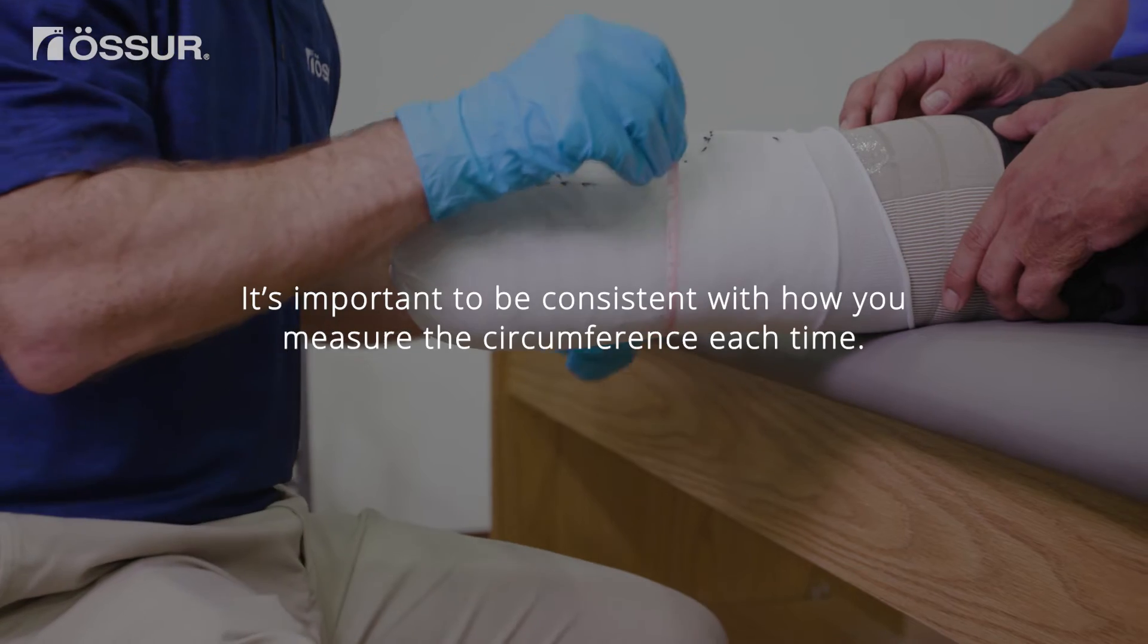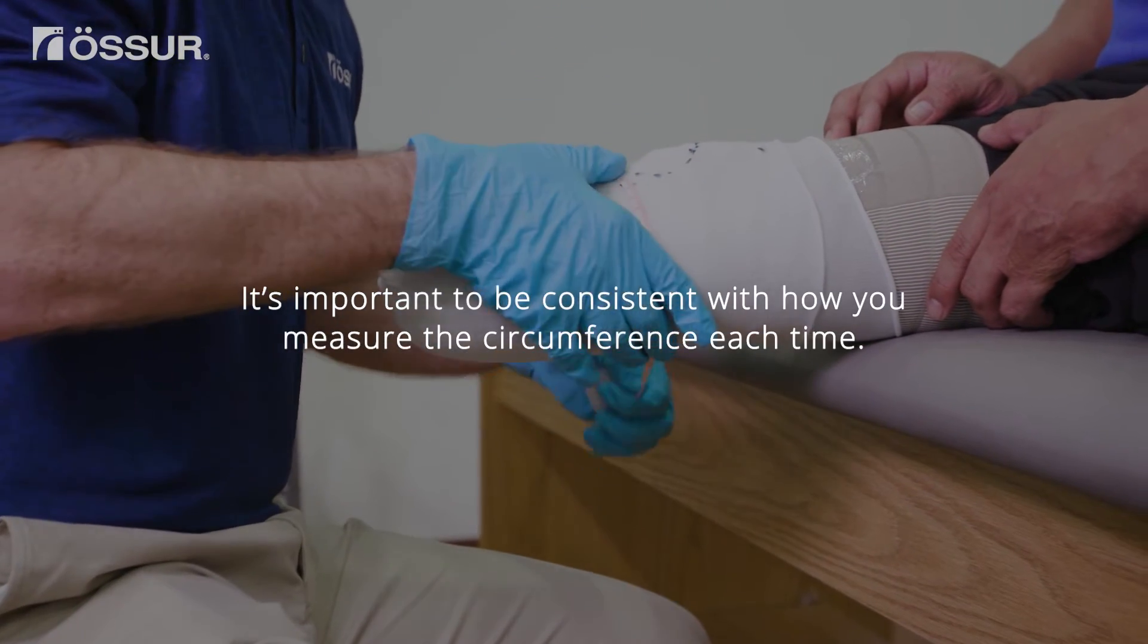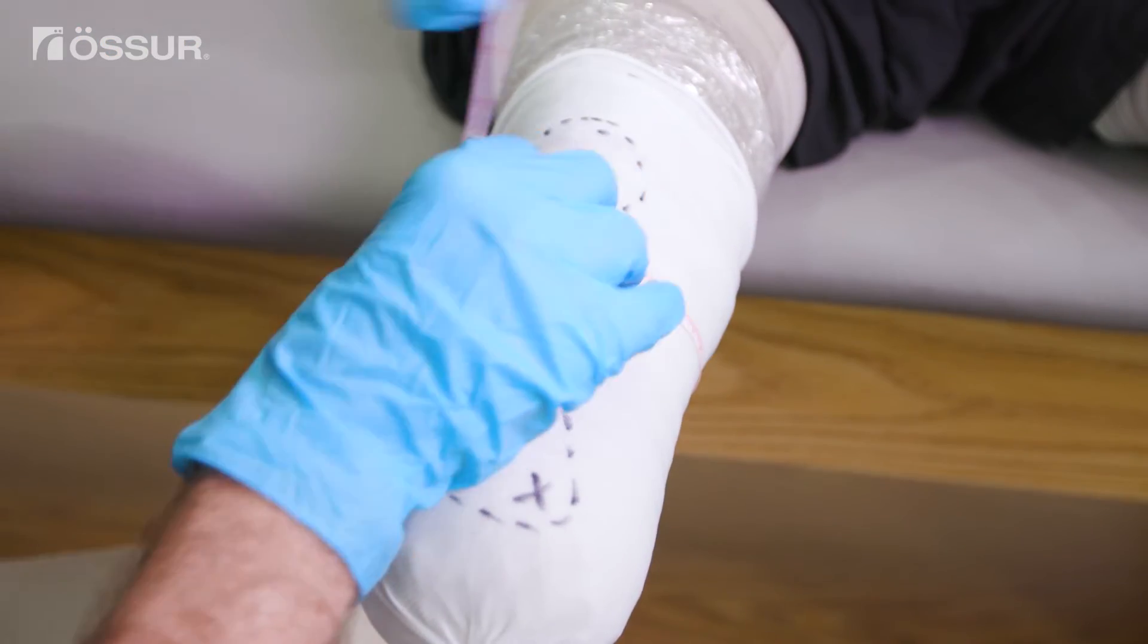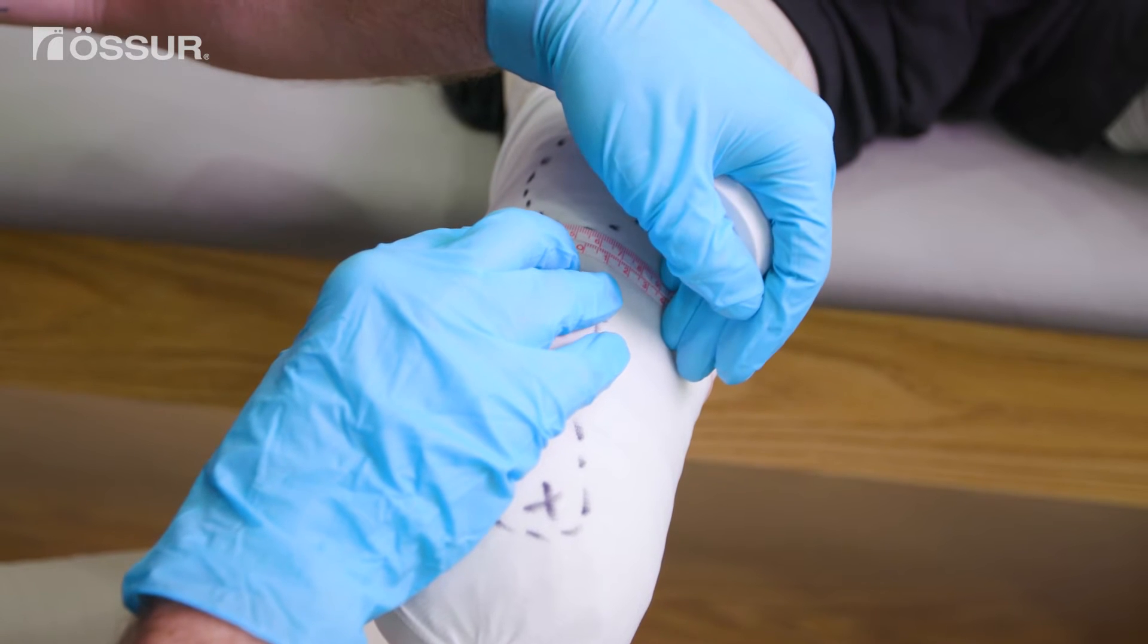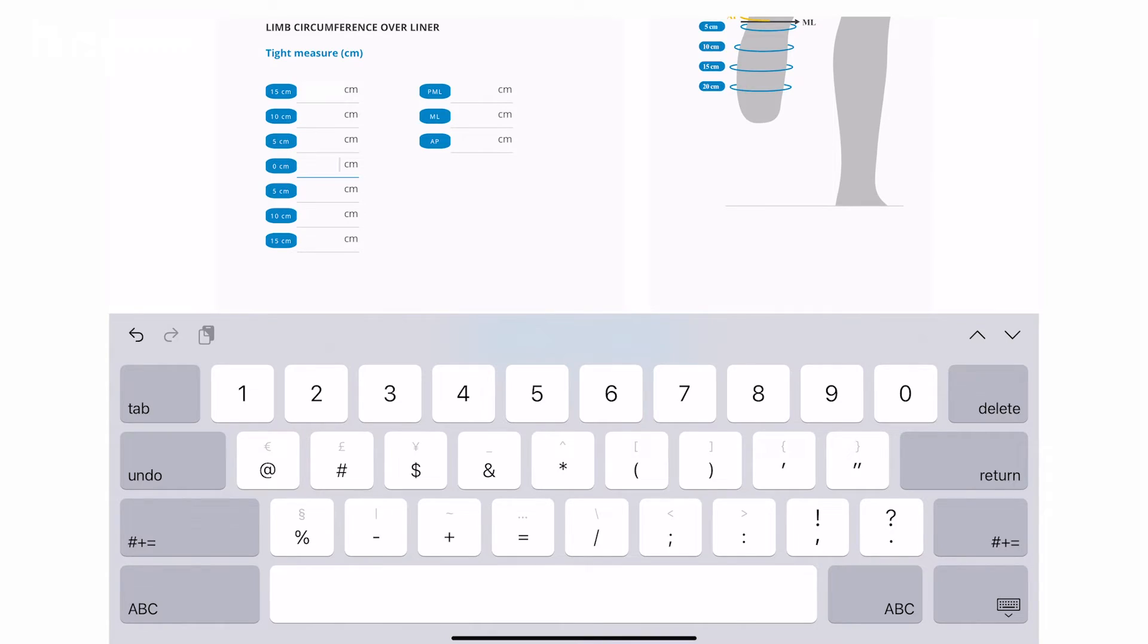It's important that you be consistent in how you measure the circumference each time. Wrap the tape measure around the limb, staying perpendicular to the limb without applying compression. At this marked location, the circumference is 35.4 centimeters.